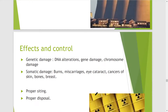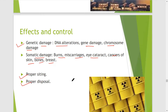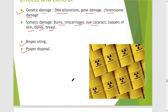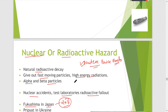Such accidents have happened in the past — like Fukushima in Japan, which happened in 2011 during the tsunami, and similarly one more accident happened in Ukraine. Nuclear radiations can cause genetic damage such as DNA alterations, gene damage, and chromosome damage. They can also cause somatic damages like burns, miscarriages, eye cataracts, and cancers of skin and bone. Nuclear pollution can be controlled by proper siting and safe disposal of nuclear waste.